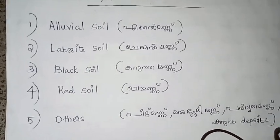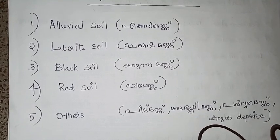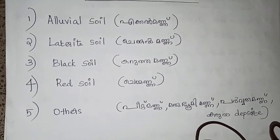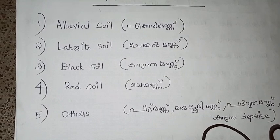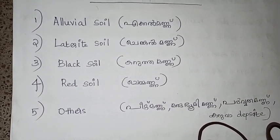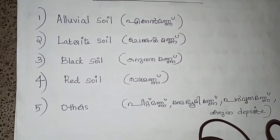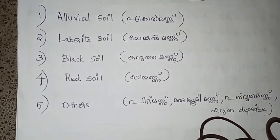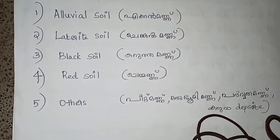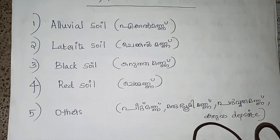Alluvial soil — its English name and Malayalam name. The Laterite soil is called Tengel Man. Black soil means Karten Man. Red Soil is called Cham Manny. These are the Malayalam names and English names.